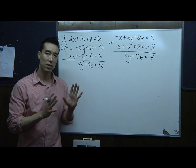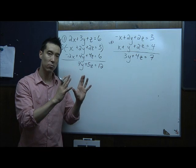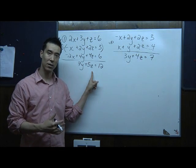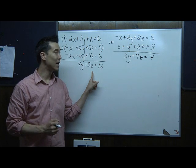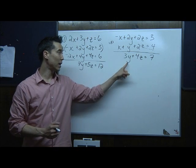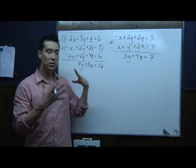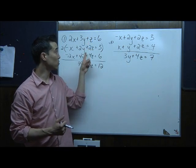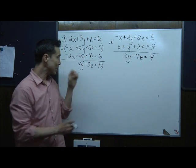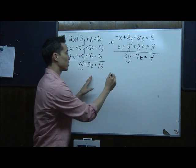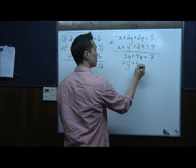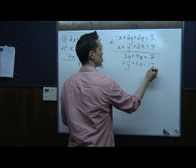Now adding together, the x drops out. 3y plus 4y is 7y, z plus 4z is 5z, and 6 plus 6 is 12. So I've gone from three equations and three unknowns to two equations and two unknowns. Now I can solve this system to find y and z, then go back to one of the original equations to get x. The next step is to pair these two equations together: 3y plus 4z equals 7 and 7y plus 5z equals 12.